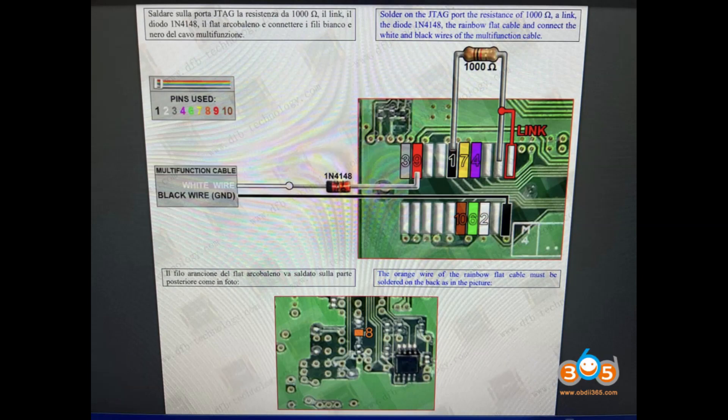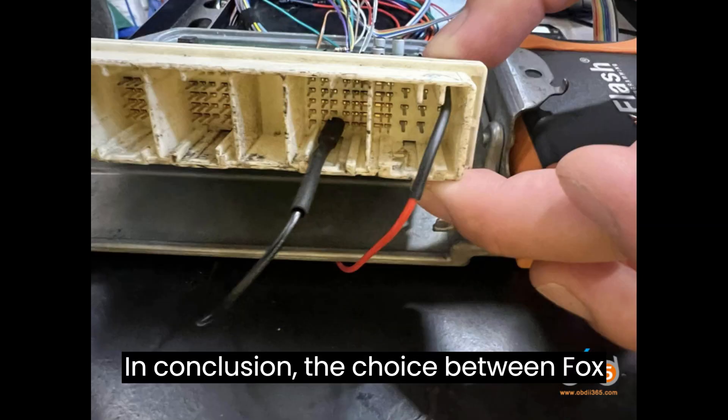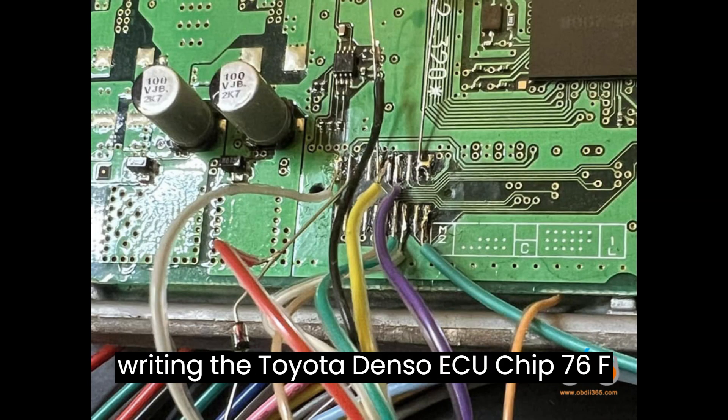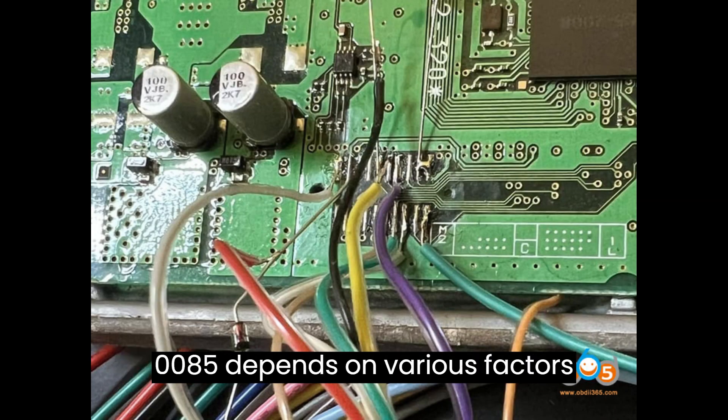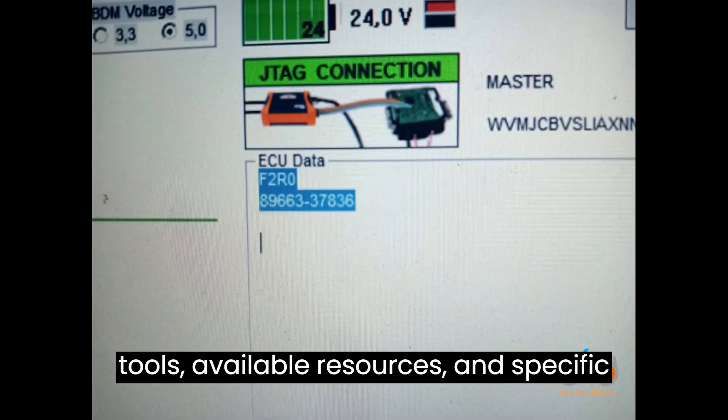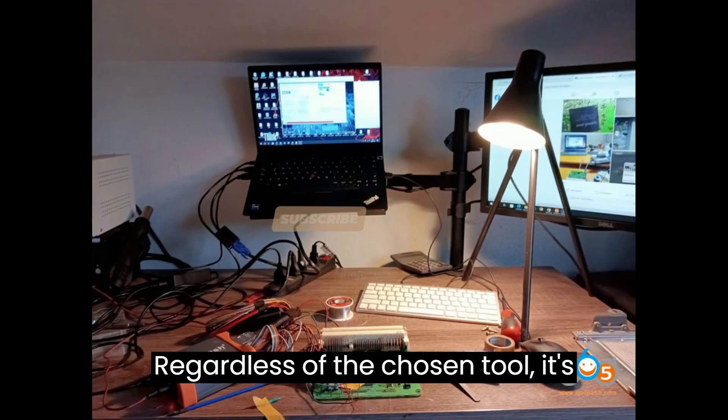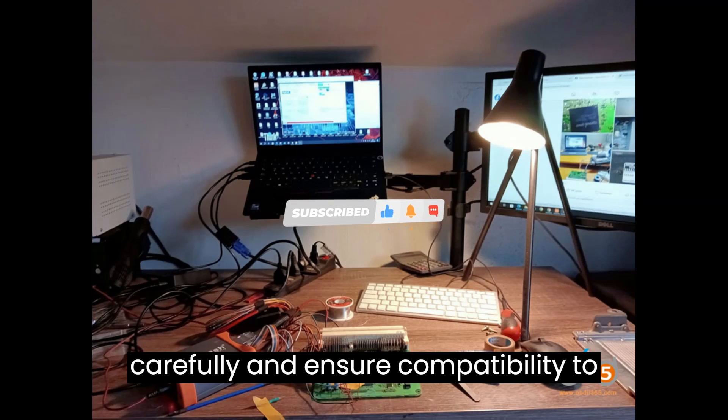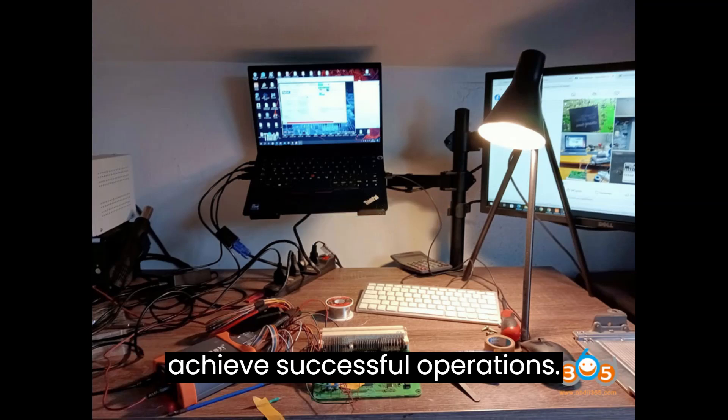In conclusion, the choice between FoxFlash, TAG, and KESS-3 for reading and writing the Toyota Denso ECU chip 76F0085 depends on various factors, such as the user's familiarity with the tools, available resources, and specific requirements of the task at hand. Regardless of the chosen tool, it's essential to follow instructions carefully and ensure compatibility to achieve successful operations.